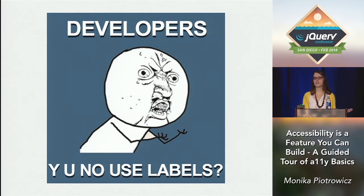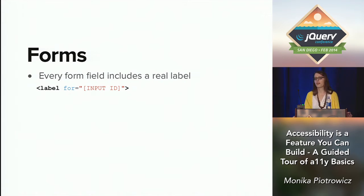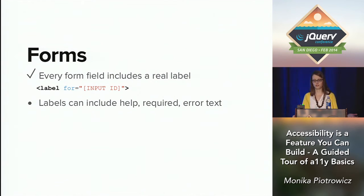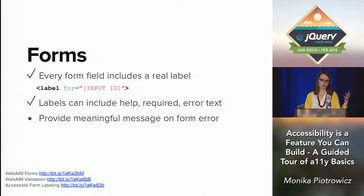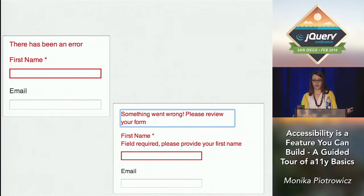Moving on to your forms — your forms need to work really well because they're the primary way your users will communicate with you. You don't want to make them guess about what to do or what happened when they tried to submit something. The easiest thing you can do is provide a label for all of your inputs — a real label using the for attribute that points to the ID of the input. Otherwise, when a user on a screen reader enters a form field, they have no way of knowing what the field is about. You can include a lot of information in a label as well: help text, whether the field is required, even error text — that way all this relevant information is programmatically tied to your input. And finally, provide meaningful messages when something happens on your form. In a better example, we actually shift focus so it's clear something has happened, and we provide a clear indication of what the next steps are and what's missing.